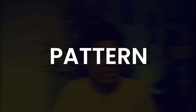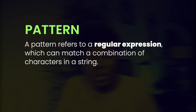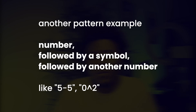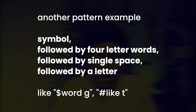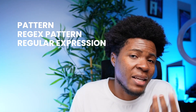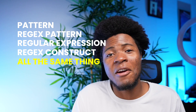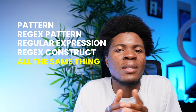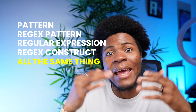Another term to understand is pattern. A pattern refers to a regular expression which can match a combination of characters. A pattern can be as simple as J-A-V-A, which is Java. Or a pattern can be a number followed by a symbol followed by another number. Or it can be a symbol followed by a four-letter word followed by a horizontal single space followed by one letter. When you hear me say pattern, regex pattern, regular expression, or regex construct, know that I'm referring to the same thing — I'll be using these words interchangeably.